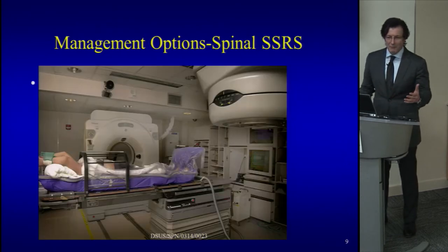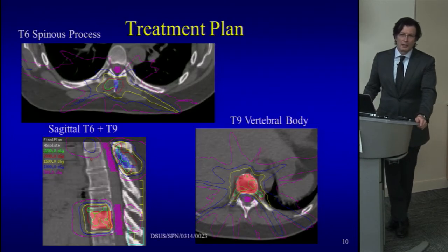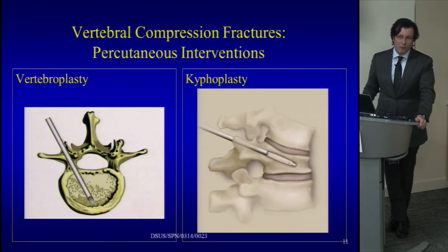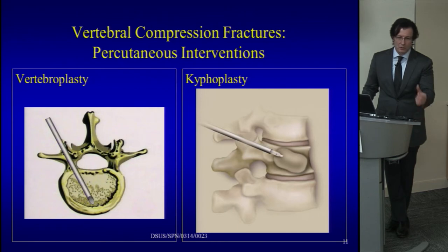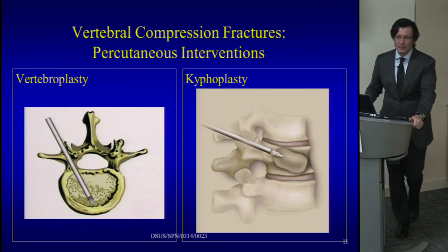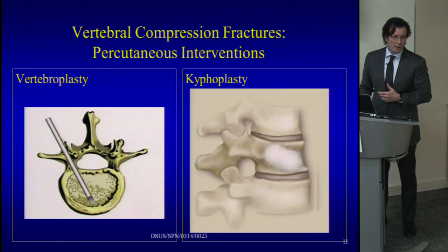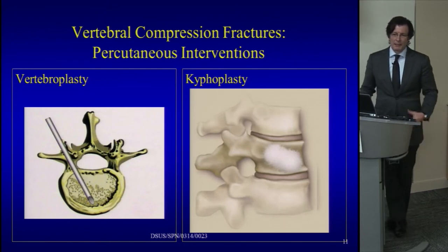Radiosurgery is definitely a third option. The vertebroplasty and kyphoplasty option is the fourth, where with vertebroplasty you go directly and inject cement into the vertebral body. With kyphoplasty, you put a balloon in, inflate it, take the balloon out creating an empty space, and then inject cement into that empty space. You can correct some deformity with the balloon.